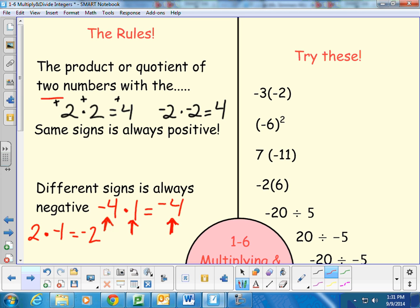So those are the rules when multiplying and dividing integers. Pretty easy rules. You want to remember those. Same positive, different, negative. On the right, you can give a couple of these a try. What I like to do is look at them and ask. So if I'm looking at negative 3 times negative 2, I say are the signs the same or different when I'm multiplying? And since they're the same, right away, I know my answer is going to be positive. And then I multiply the numbers as I normally would. 3 times 2 is 6.